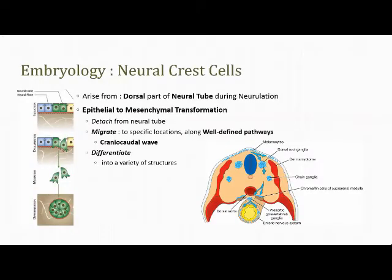Neural crest cells are those that arise from the dorsal part of the neural tube during neurulation. These are unique cells which undergo epithelial-to-mesenchymal transformation, then detach from the neural tube and migrate to specific locations along well-defined pathways. This migration is guided by several local factors, and the cells then differentiate into a variety of structures depending on their site of migration.